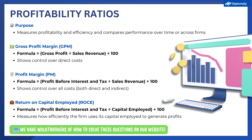So let's start with profitability ratios. These effectively help a firm measure its ability to generate profits and help investors understand what their return on investment will be. There are three you need to know in this course, and they will all be given to you on your final exam on the formula sheet. The first is the gross profit margin, which refers to a measure that looks at a firm's gross profit expressed as a percentage of its revenue. The GPM is helping us understand how well a firm controls its direct costs.